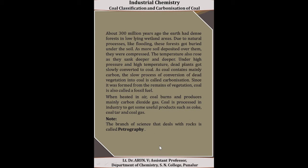How is coal formed? About 300 million years ago, the Earth had dense forests in low-lying wetland areas. Due to natural processes like flooding, these forests got buried under the soil. As more soil deposited over them, they were compressed. The temperature also rose as they sank deeper and deeper, and under high pressure and high temperatures, dead plants got slowly converted into coal.